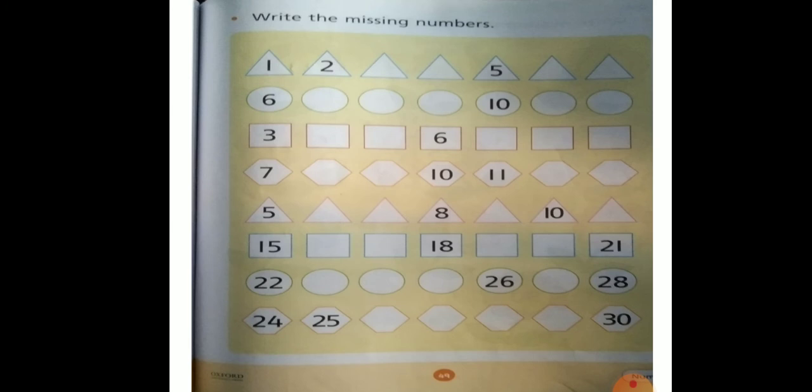Eight, nine, one zero ten, one one eleven, one two twelve, you will write here. After number of six is seven, eight, and nine you will write here.